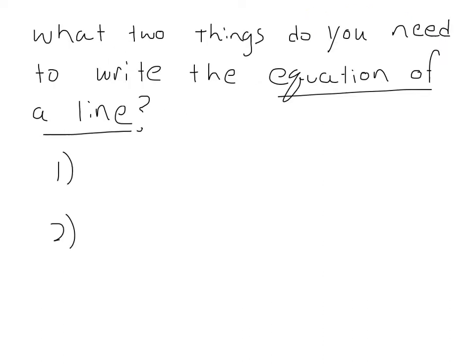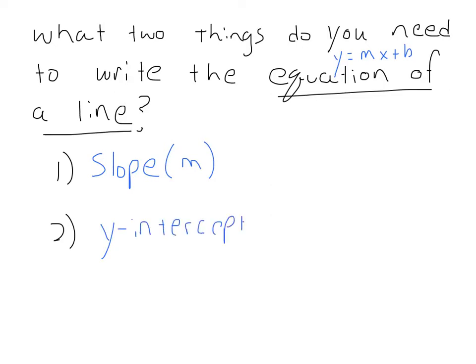Next part of the note: what two things do you need to write the equation of a line? Again, what should immediately pop into your head? Should be y equals mx plus b. Get in the habit of writing that out. What two things do you need to write it? You need the m, which is the slope, and you need the y-intercept, which is the b.